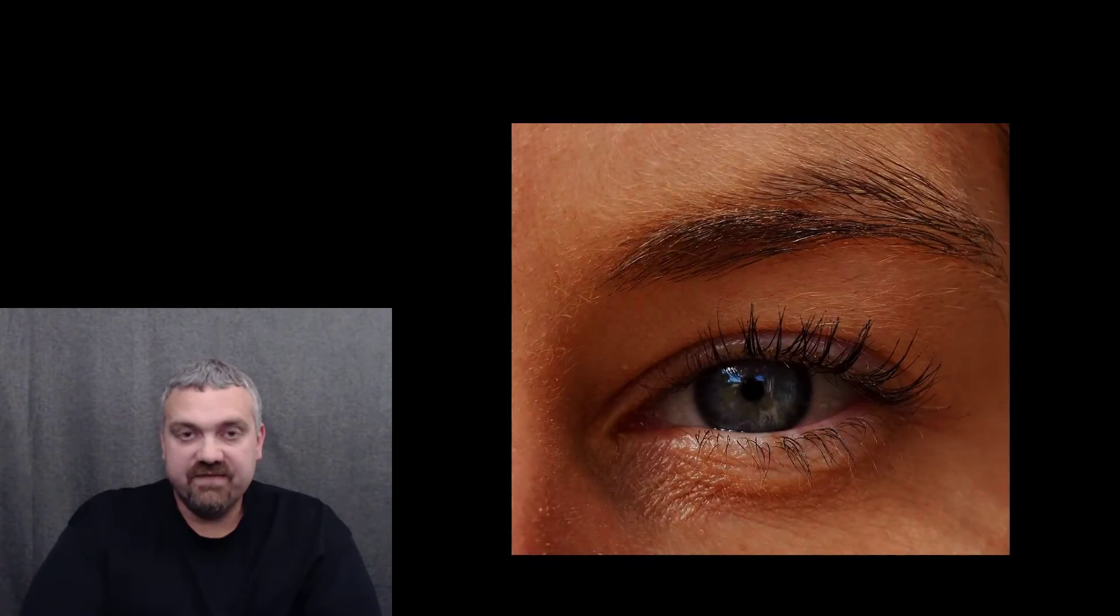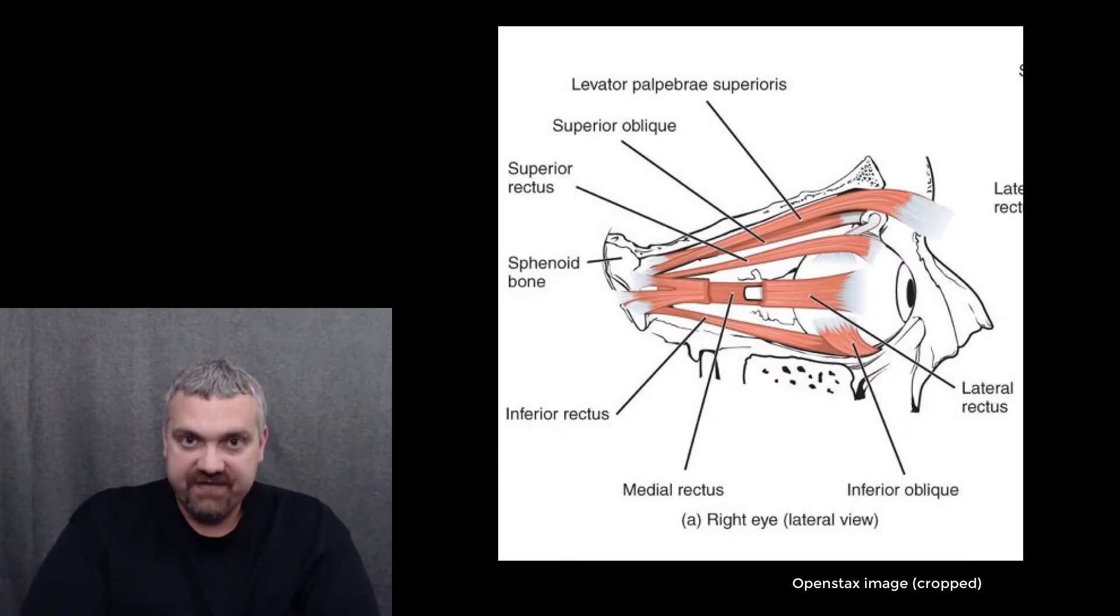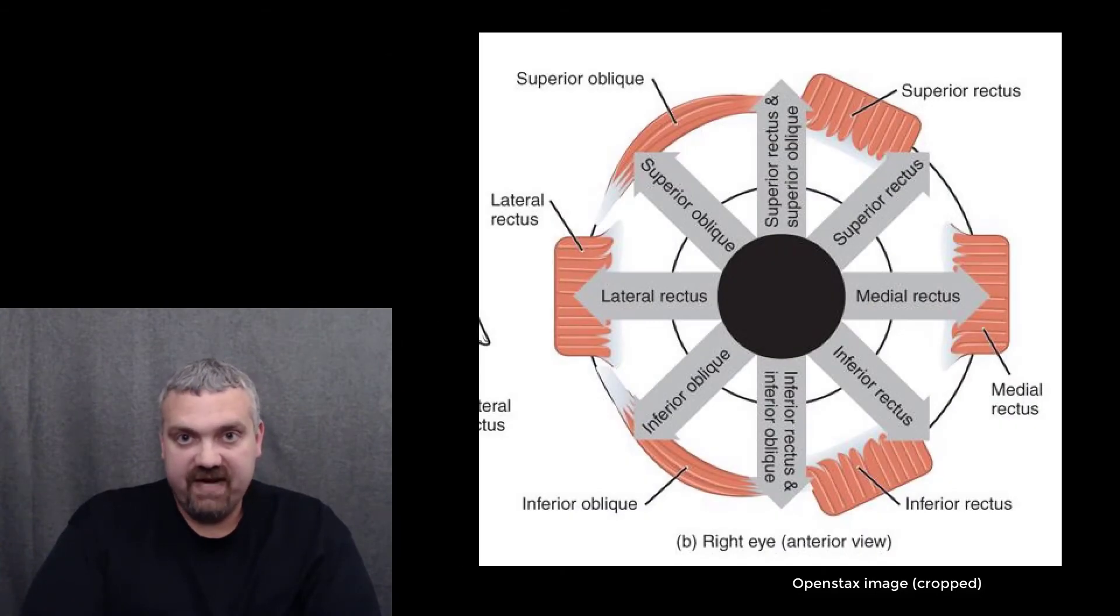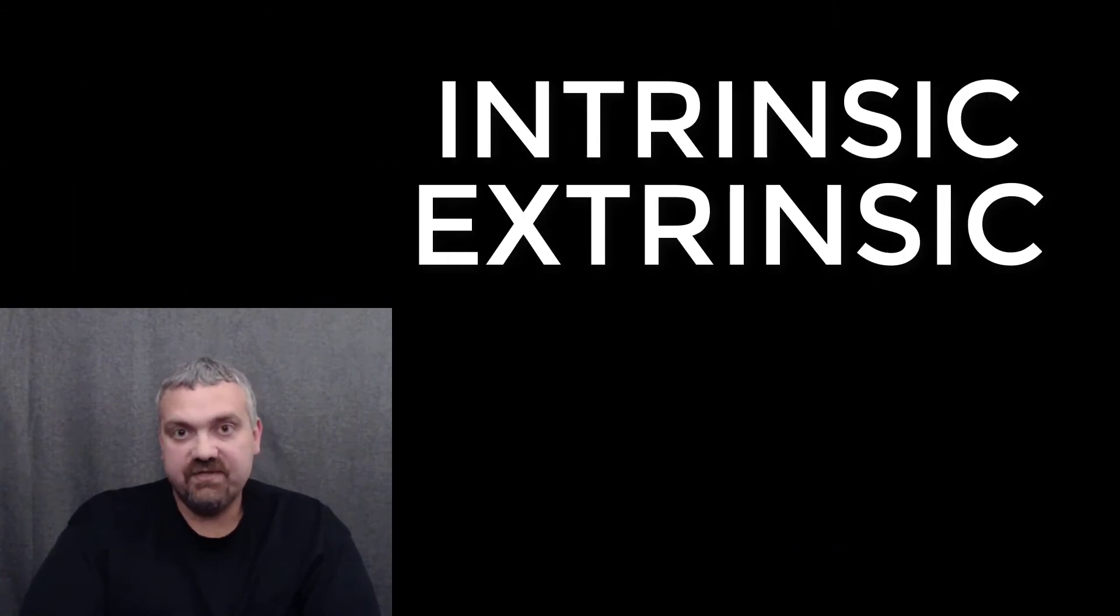So key examples here would be the intrinsic versus extrinsic muscles of the eye. So the intrinsic eye muscles will be the ones that control the shape of the lens, the diameter of your pupil. The extrinsic eye muscles are outside of the eyeball. They're the ones that move the eye as you look different directions. So intrinsic versus extrinsic.